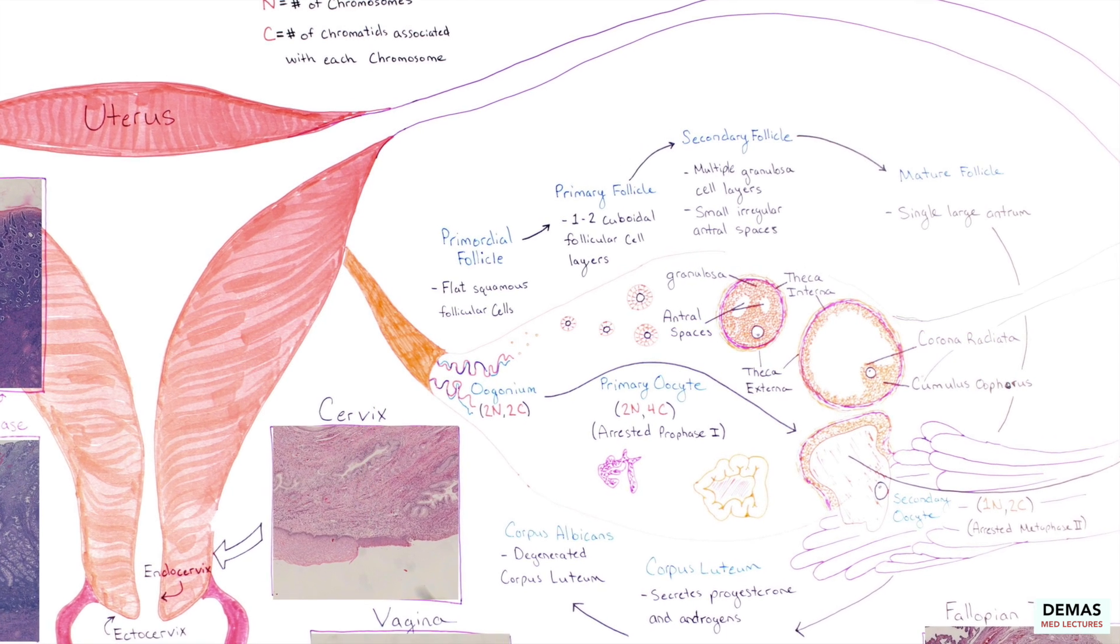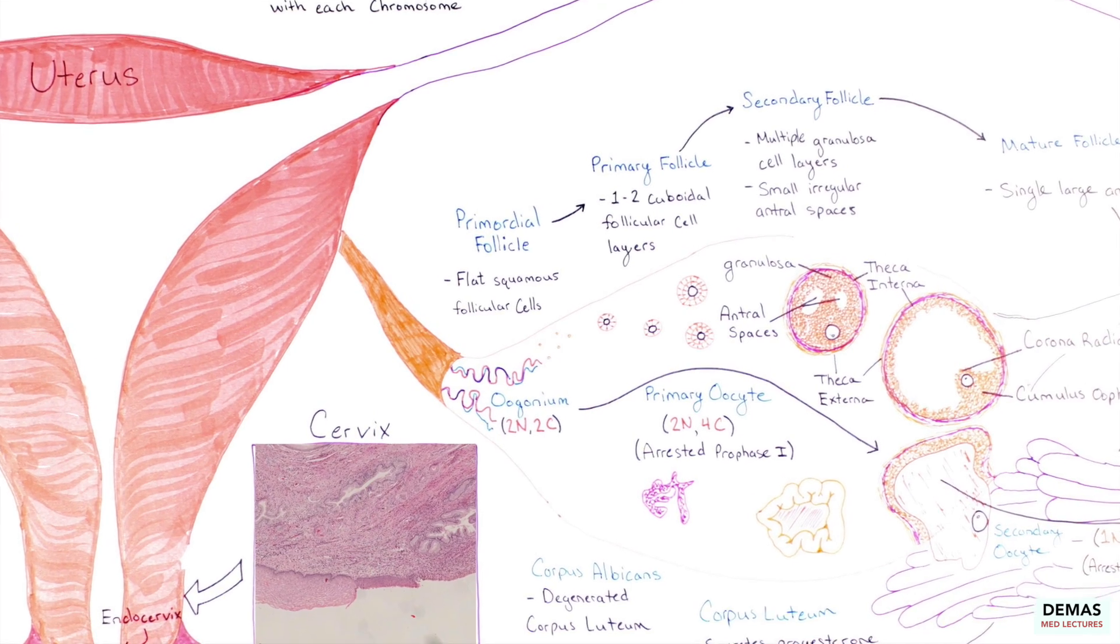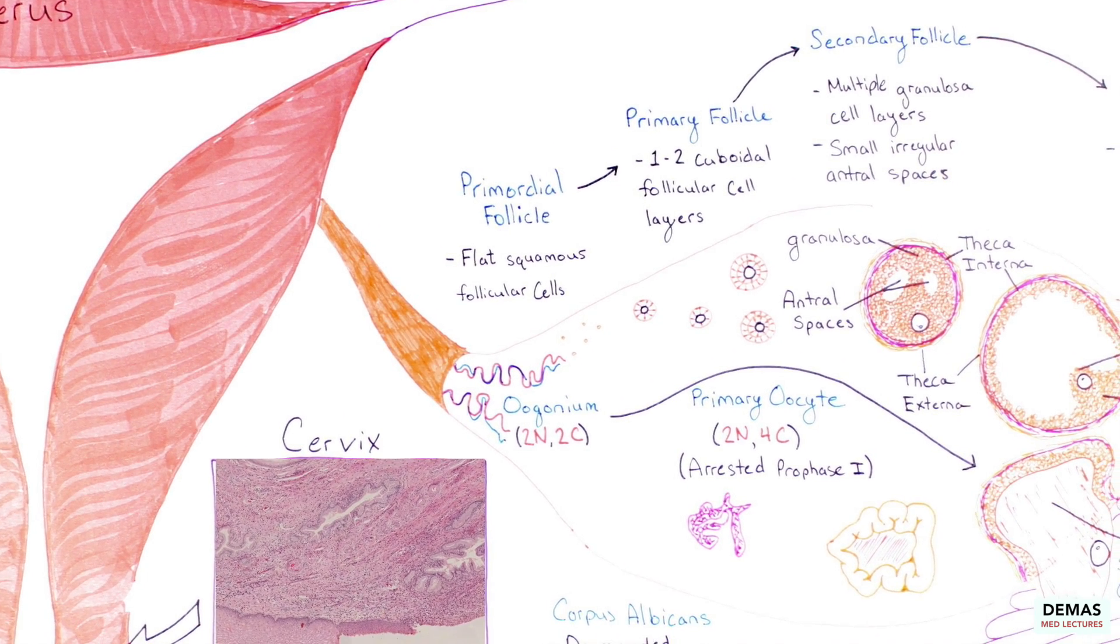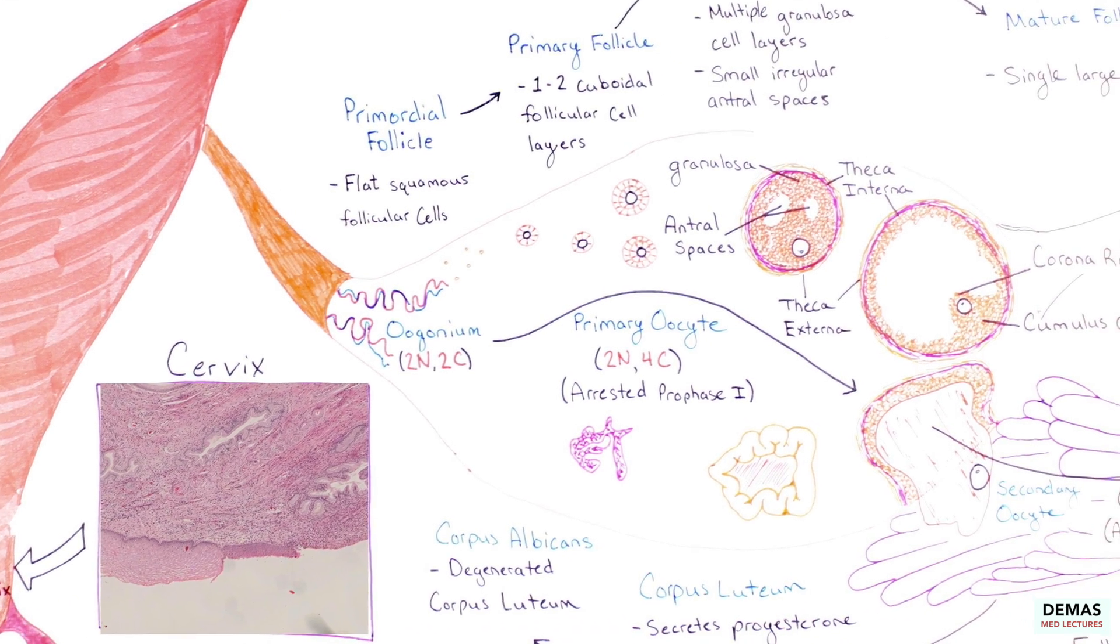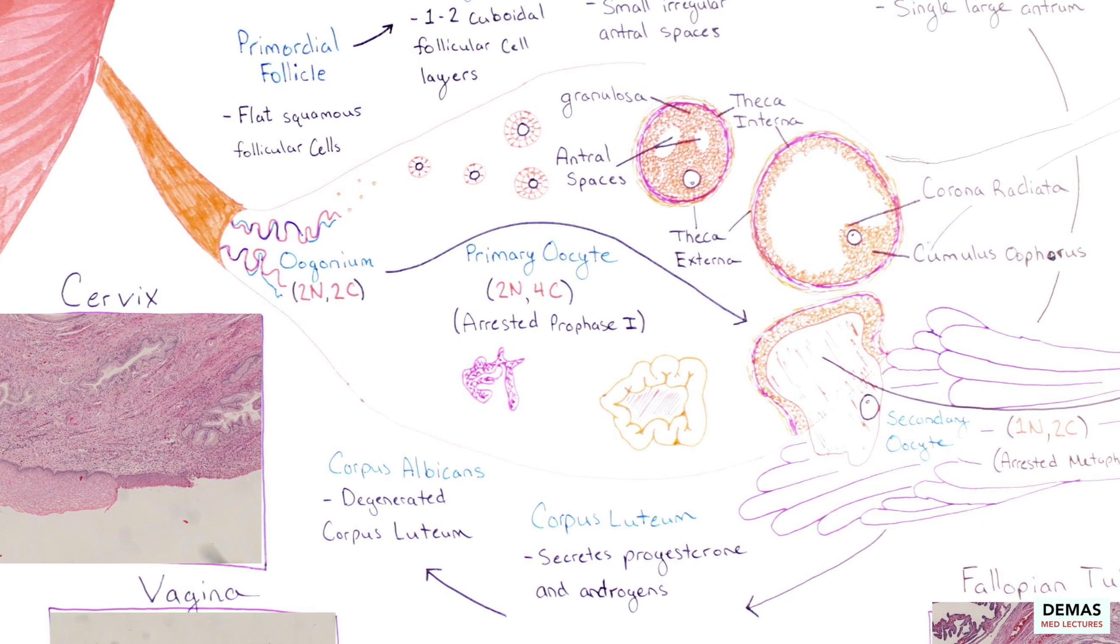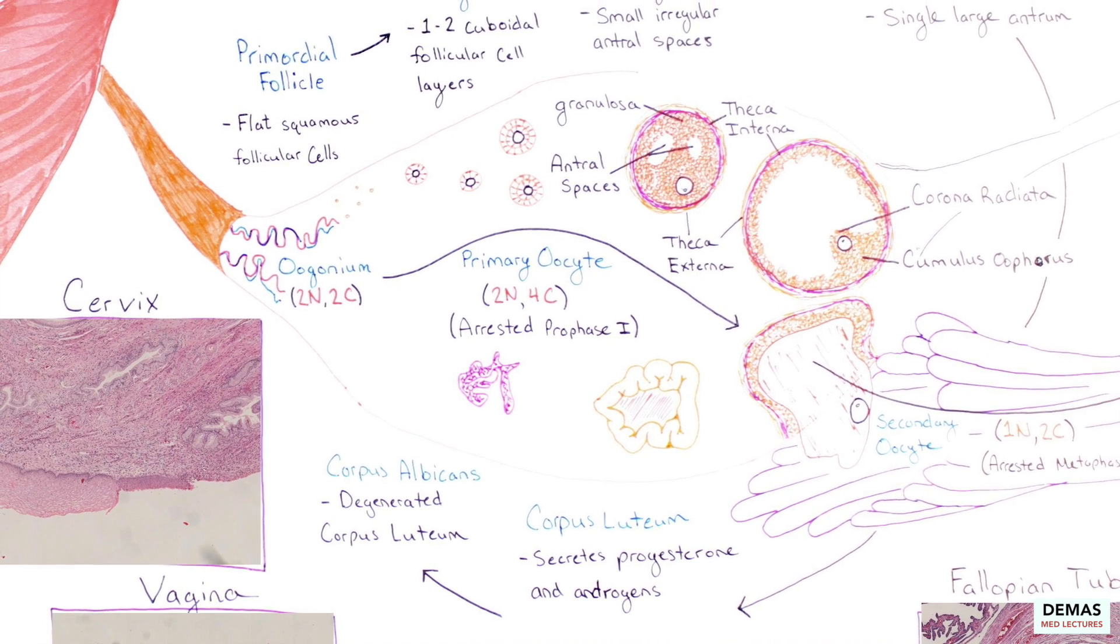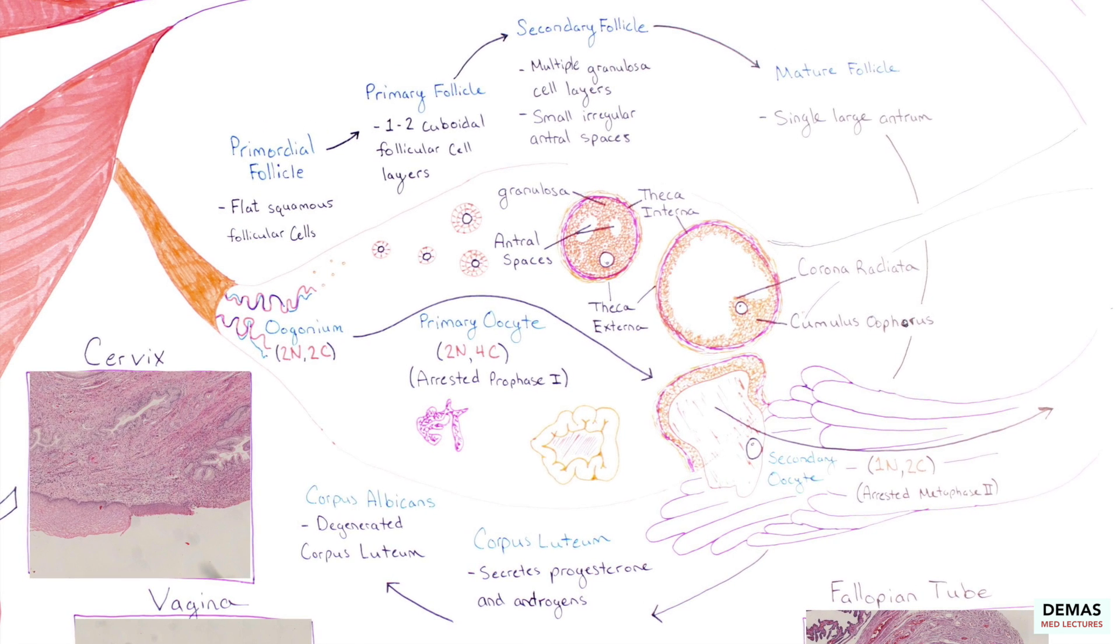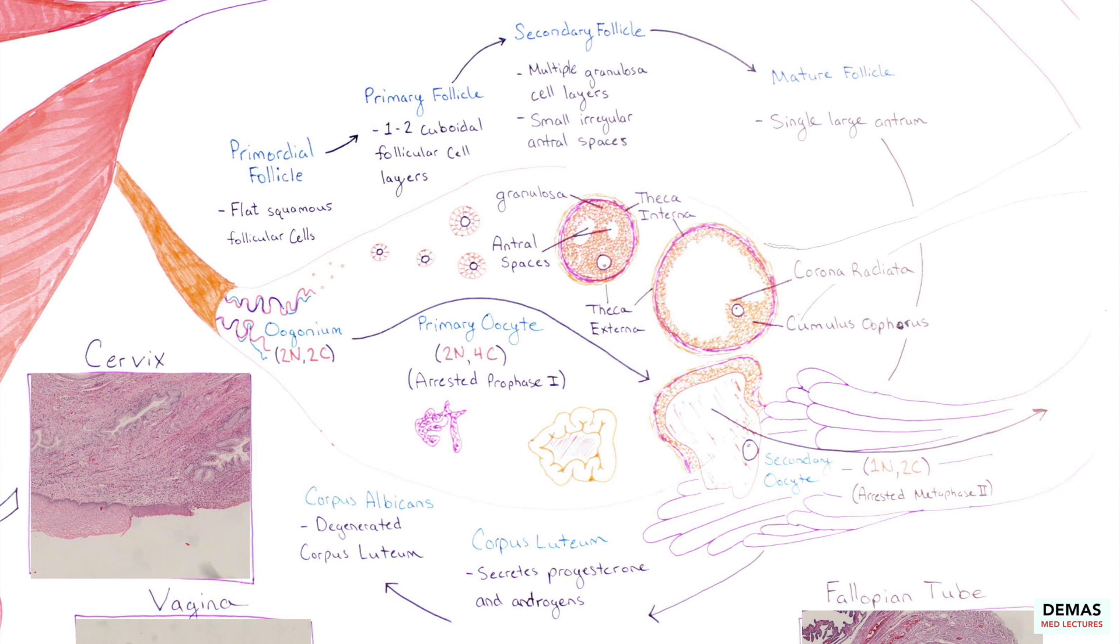As a quick review, the oogonium starts as a diploid cell with 2N2C. The chromatids are replicated forming the primary oocyte with 2N4C. The primary oocyte is arrested in prophase I until puberty and then during each menstrual cycle a few primary oocytes continue to form secondary oocytes. The secondary oocytes are formed right before ovulation.